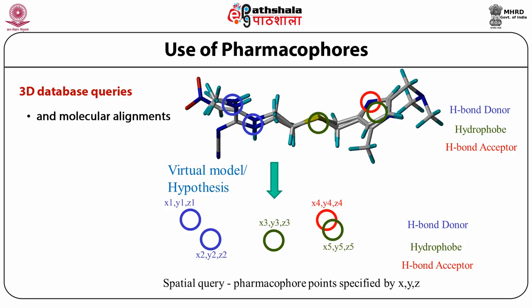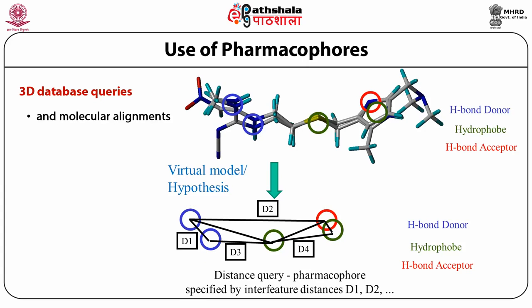Using this spatial query we can search the database very quickly. We can add distances, which keeps the organization perfectly correct and specific. However, using distance queries will restrict the number of hits in the database. We can also use angles between features to restrict even further, but the more restrictions or constraints used, the more compounds we lose.